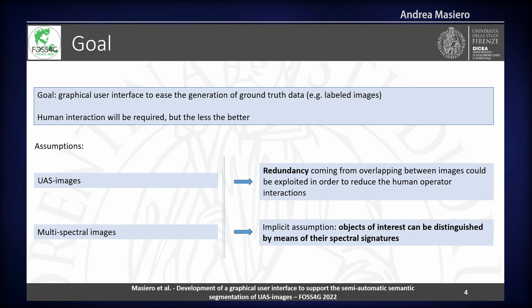Furthermore, we are also assuming that we have some multispectral information, so we are going to deal with multispectral images. In particular, we are going to make an implicit assumption that the objects of interest can in some way be distinguished from each other — and in particular from whatever is not of interest — by means of their spectral signature. This is not so surprising; it's done quite in a standard way, but it's quite important with respect to what we are going to see in the next slides.